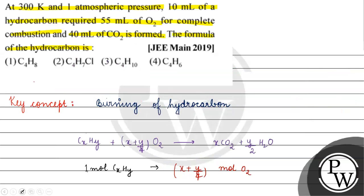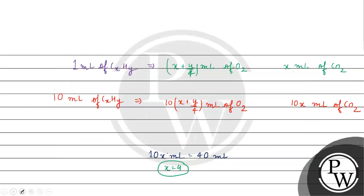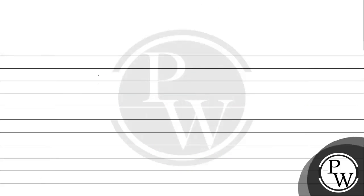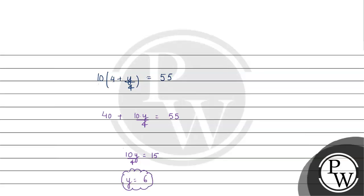Now for the volume of oxygen — the question gives us 55 ml for complete combustion. Putting x = 4, we write: 10(4 + y/4) = 55, which gives 40 + 10y/4 = 55, so 10y/4 = 15, and therefore y = 6.